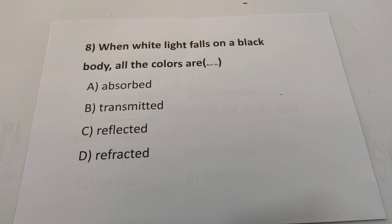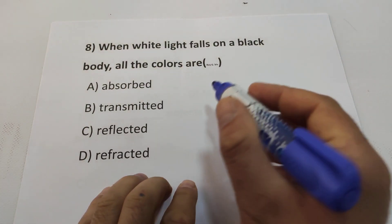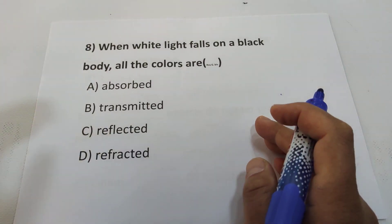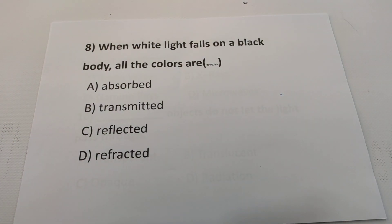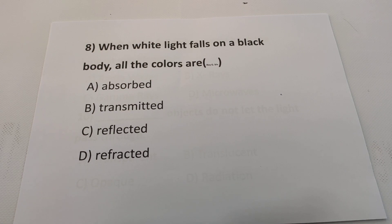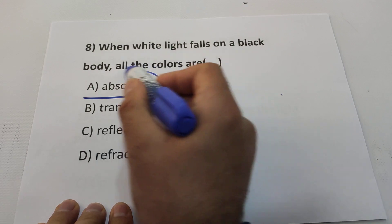Question 8: When white light falls on a black body, all the colors are absorbed. For example, a red object absorbs all colors and reflects only red; a green object absorbs six colors and reflects green. But a black body absorbs all colors. The answer is A.